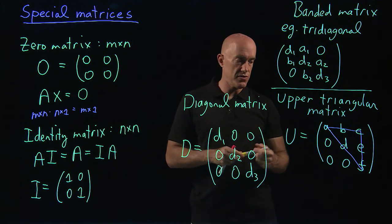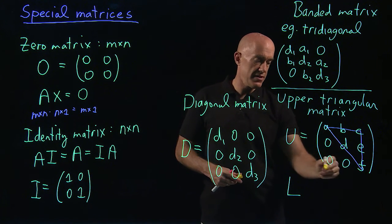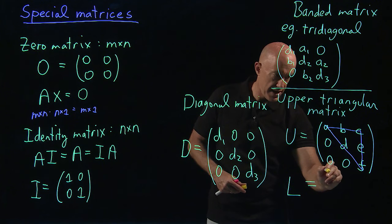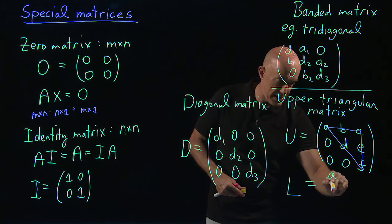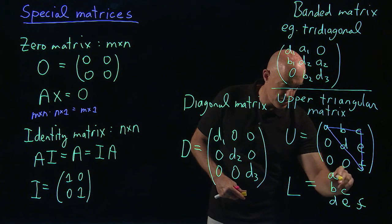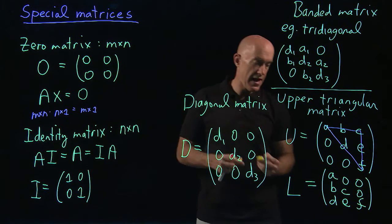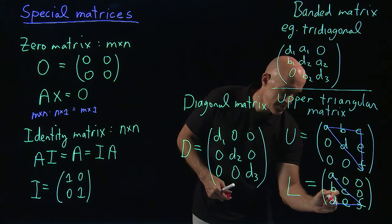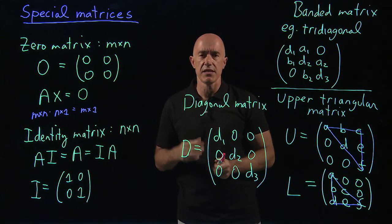And then you can have a lower triangular matrix, so L. Obviously, you can see what it is. Let me see if I can squeeze it in here. We have a lower, so we have an A, and then a B, and a C, and then a D, E, and F. So then you would have a 0 here, a 0 here, a 0 here. And that would be the lower triangular matrix, and we can draw our triangle here.